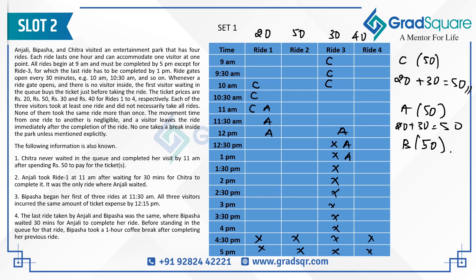For Bibasha to also reach Rs.50 by 12:15 pm starting at 11:30 am, she must take Ride 2 (Rs.50) at 11:30 am, finishing at 12:30 pm. For the last ride shared by Anjali and Bibasha: Ride 1 is already taken by both, Ride 2 is taken by Bibasha, and Ride 3 has no slots after 12:30 pm. Therefore, the only possible last ride for both is Ride 4.